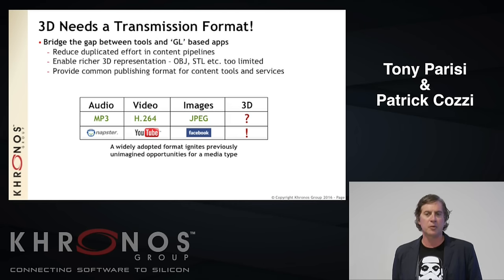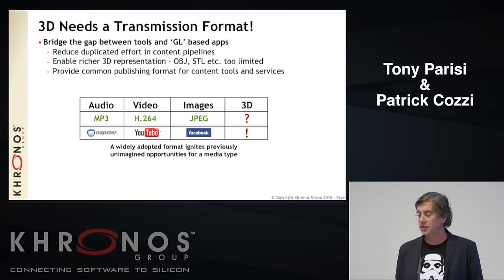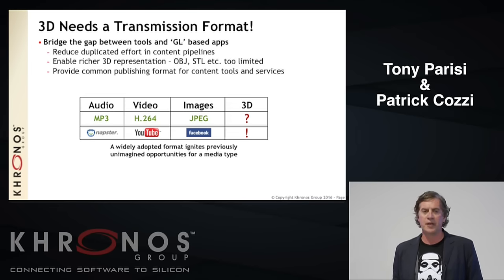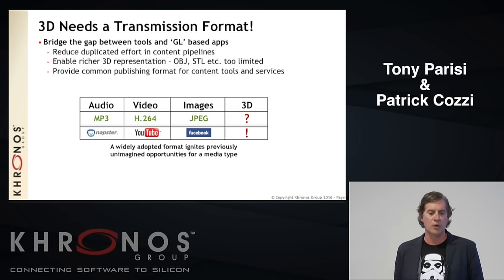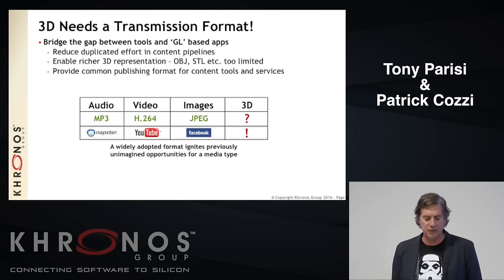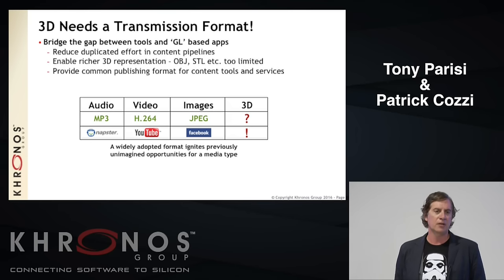We had a file format called Collada for several years, standardized by Khronos, but Collada files are not well-suited for online transmission — they're not small, they're XML-based, and take a lot of time to process. So we decided we need an efficient format to bridge the gap between content creation tools like Maya or Blender and WebGL, and eventually mobile and desktop applications.